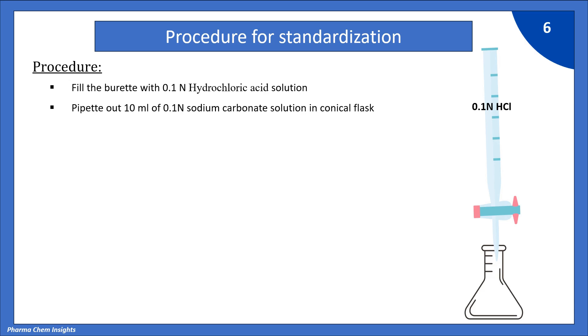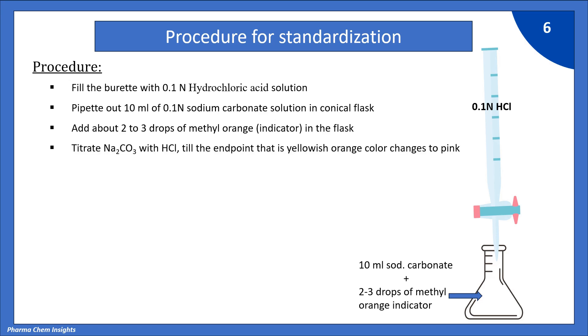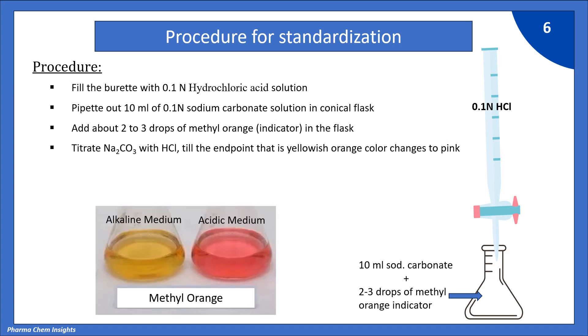Let us see the stepwise procedure for standardization. First, fill the burette with 0.1 normal hydrochloric acid HCl solution. Pipette out 10 ml of 0.1 normal sodium carbonate solution in conical flask. Add about 2 to 3 drops of methyl orange indicator in the flask. Titrate sodium carbonate solution with HCl till the endpoint, yellowish orange color changes to pink. In alkaline medium it shows yellow color, while in acidic medium it shows pink color. The volume of HCl V2 is noted. Repeat the procedure 3 times and the average volume is calculated.